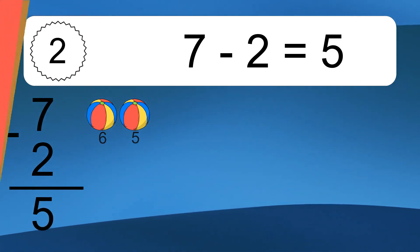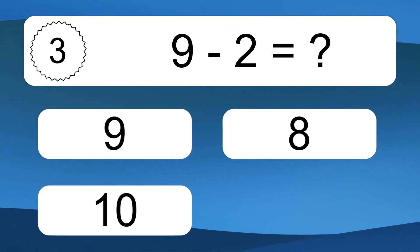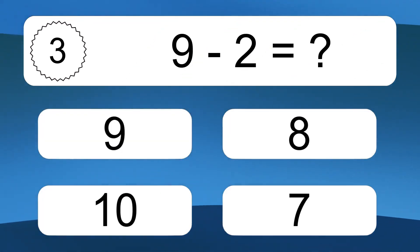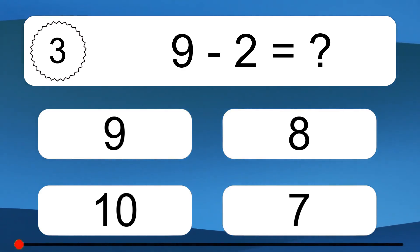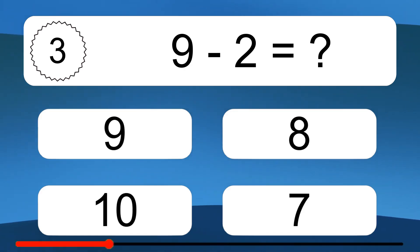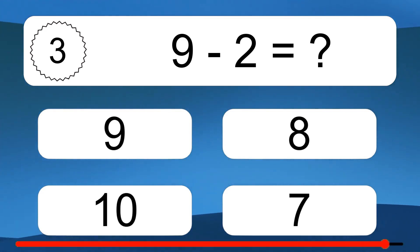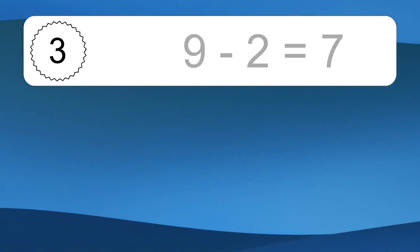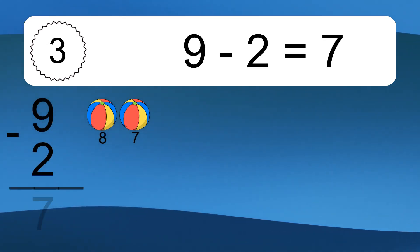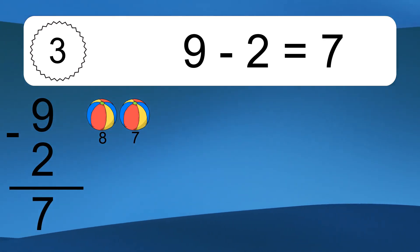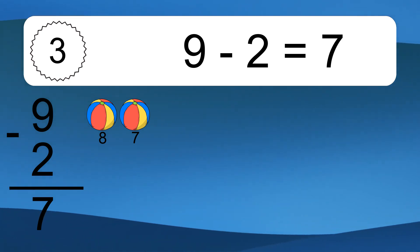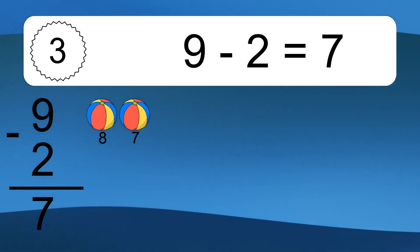9 minus 2 equals what? 9 minus 2 equals 7. Let's count it: 8, 7.